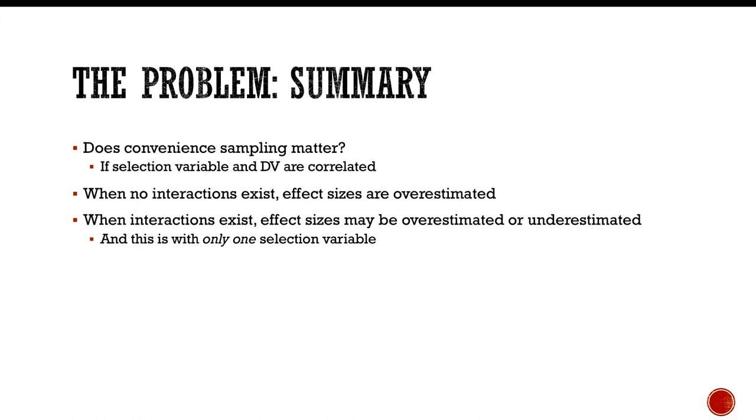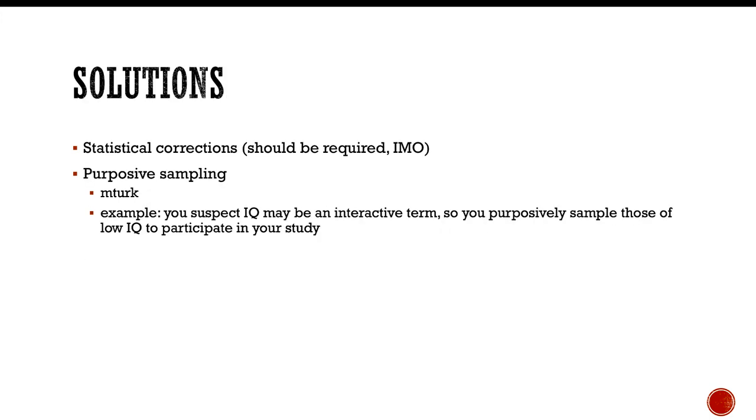So solutions. There are statistical corrections. And that's what I did with my dissertation. Some subsequent work was I developed some corrections that kind of sort of work. But I think a better thing to do is to do purposive sampling. So we tend to do research on undergraduate psychology students because it's convenient and it's cost efficient. But maybe we can start doing a little more MTurk studies and get larger swaths of the population. So let's say you suspect IQ may be an interactive term or it may be a variable that interacts with your treatment effect. And so what do you do? You purposively sample those of a lower IQ to participate in your study.